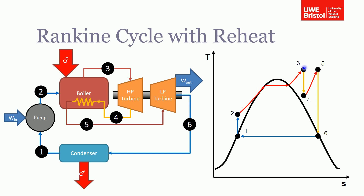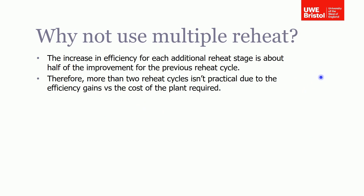On the T-s diagram, you can see: the water is pumped, heated, and then instead of expanding all the way down through the turbine, the steam is taken out at an intermediate point, passed back through the boiler and heated back up to point five. Notice that the pressure drops from point three to four, but the temperature is increased, allowing us to extract more work from that steam. This reheat cycle addresses the efficiency issues that arise from simply increasing boiler pressure alone.